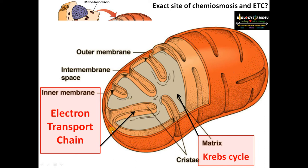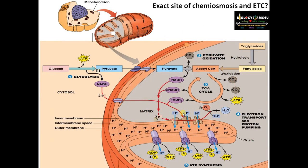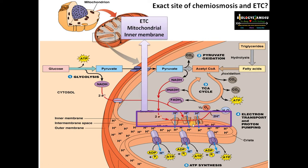Zooming into the inner membrane, protein complexes are embedded in the mitochondrial inner membrane. The electron transport chain occurs in the inner mitochondrial membrane. Electrons are donated by NADH and FADH2 that are formed during the Krebs cycle and glycolysis. So the site of the electron transport chain is the mitochondrial inner membrane.